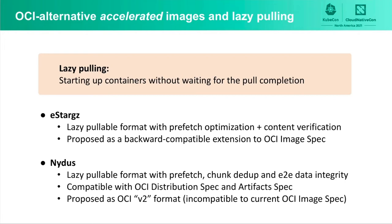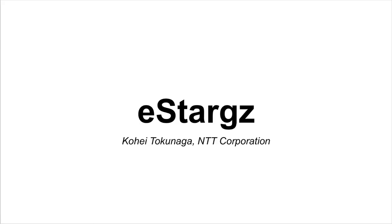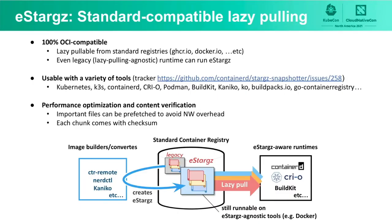eStargz is an OCI-compatible image format for lazy pulling. This comes with pre-fetch optimization and content verification. This is proposed as a backward compatible extension to OCI image specification. NIDAS is a lazy pullable image format with pre-fetch, chunk data deduplication, and end-to-end data integrity. This is compatible with OCI distribution spec and OCI artifact spec. This is incompatible with OCI image specification, so this is proposed as OCI image spec v2 format.